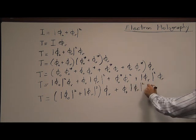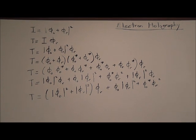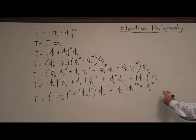The first term represents the transmitted wave, the second represents the wave scattered off the object, and the third represents the conjugate image.